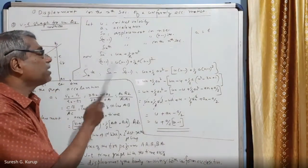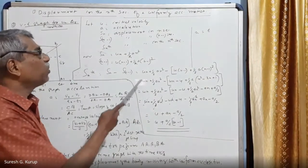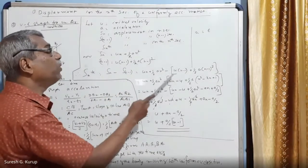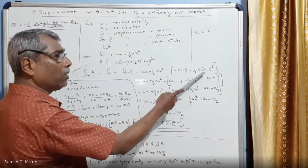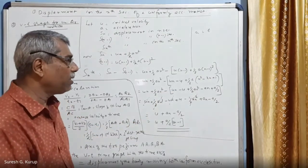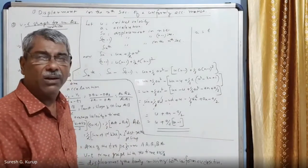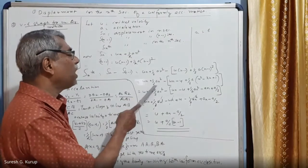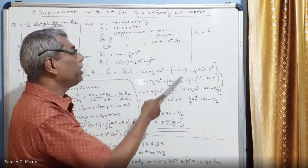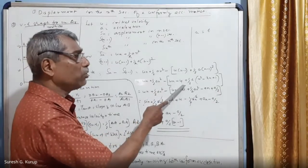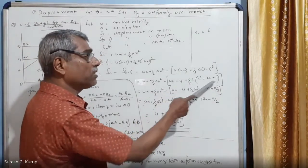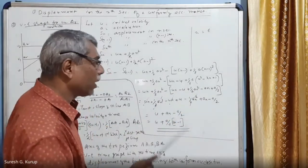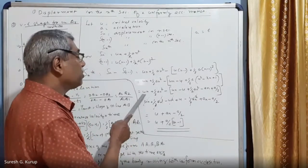Therefore, S_n (displacement in nth second) equals S_n minus S_(n-1), which equals [un + ½an²] minus [u(n-1) + ½a(n-1)²]. Opening the brackets, we get un + ½an² minus u(n-1) minus ½a(n-1)². Expanding (n-1)² gives n² minus 2n plus 1.